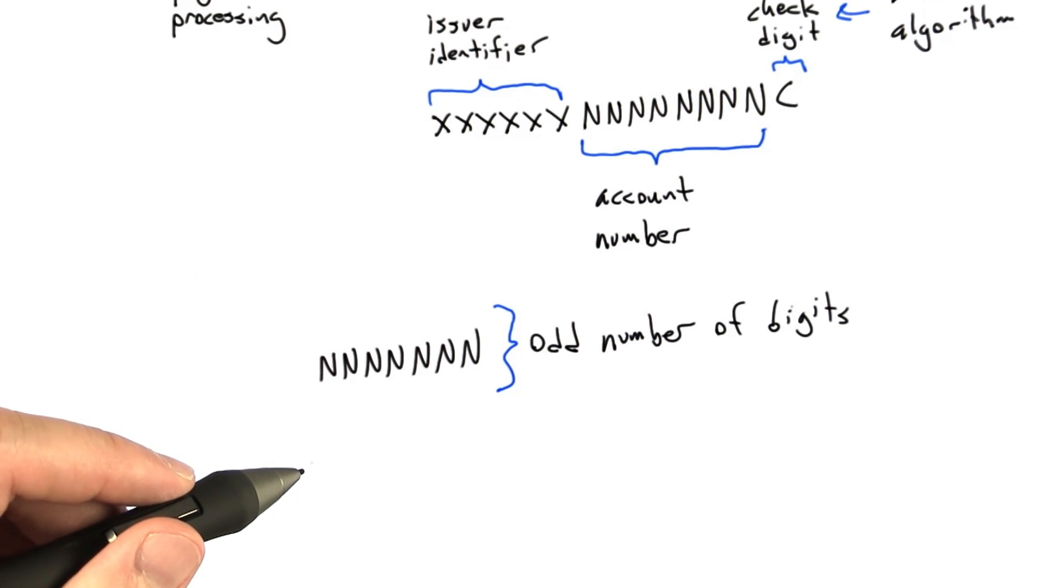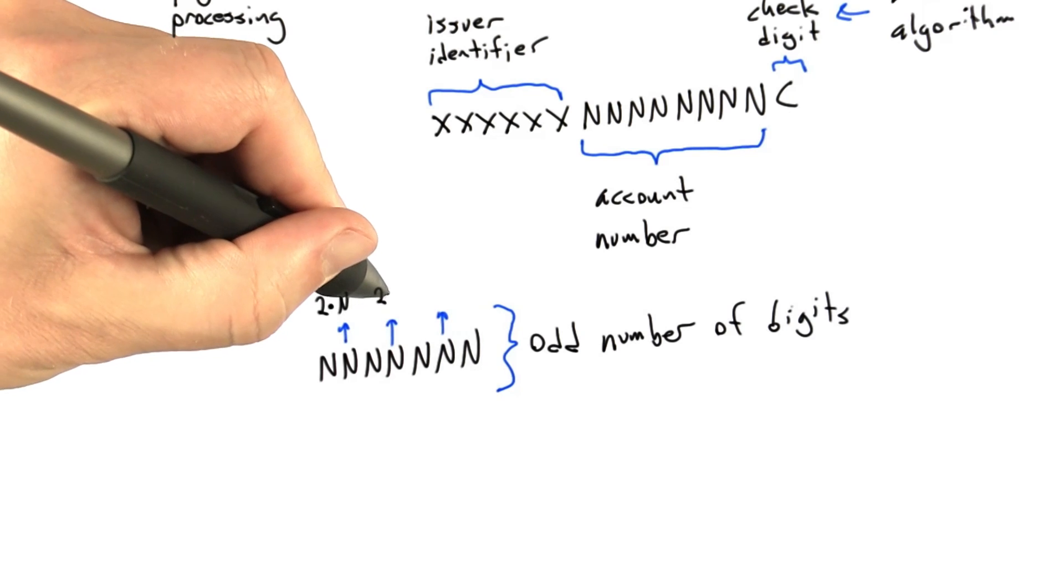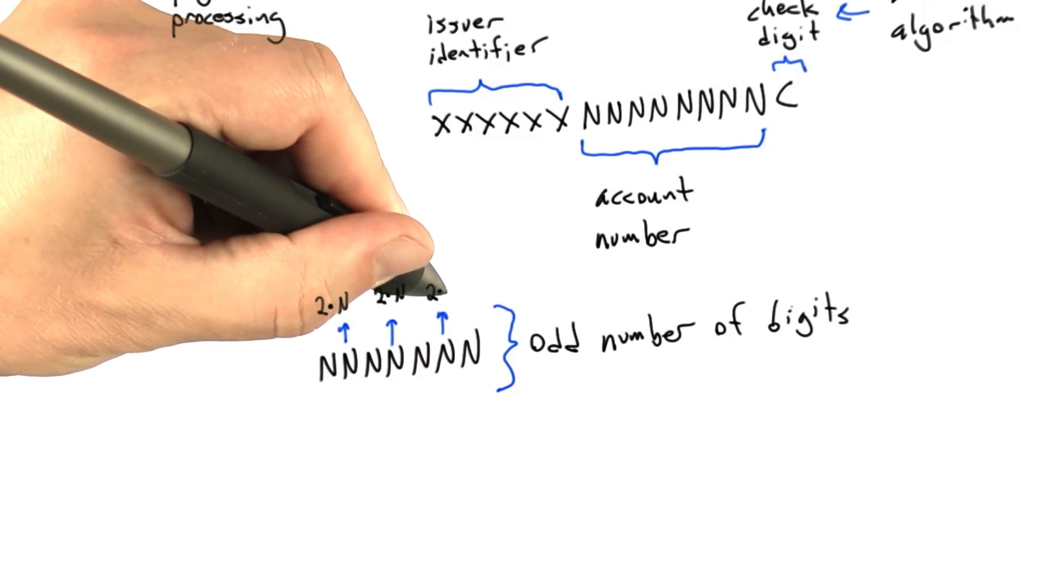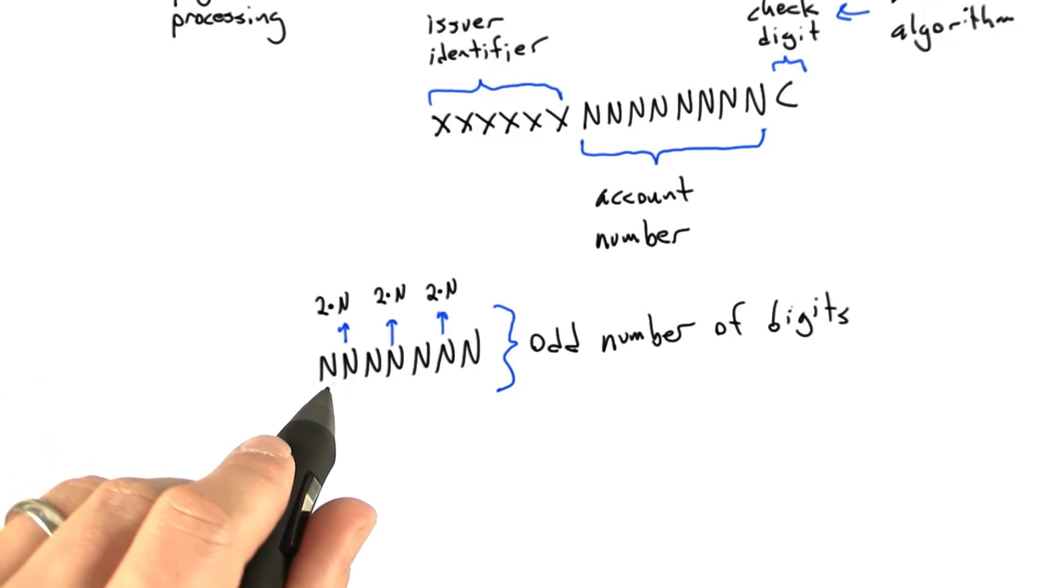If there's an odd number of digits, what we're going to do is go through the digits and take every even numbered digit and multiply it times 2. So the odd digits we're going to leave alone, and the even ones we're going to multiply times 2.